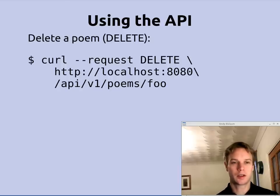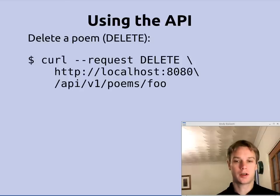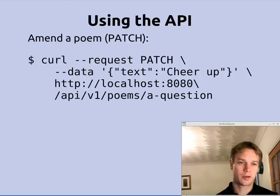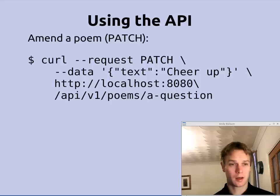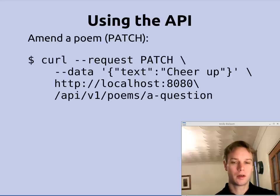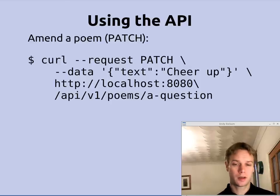To delete a poem, use --request delete and provide the poem's URL. For both PUT and DELETE, an empty string comes back so you know it worked. To partially modify a poem without providing all its details, use PATCH: --request patch with --data containing only the fields you want to change, such as just the text, and provide the URL with the poem's ID.